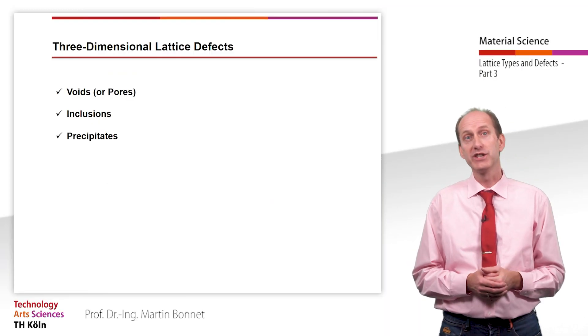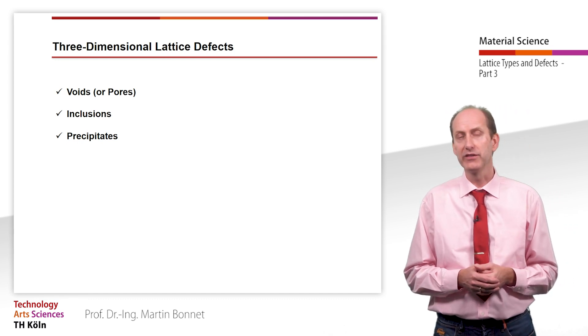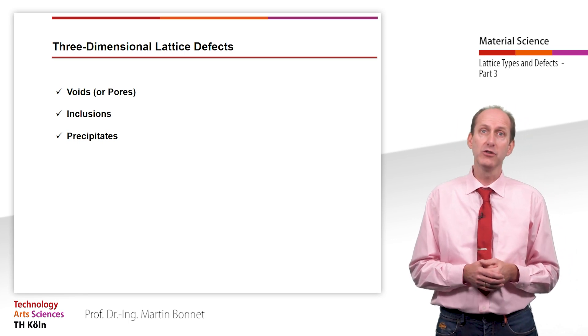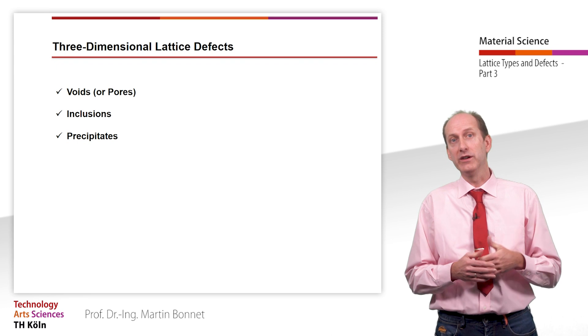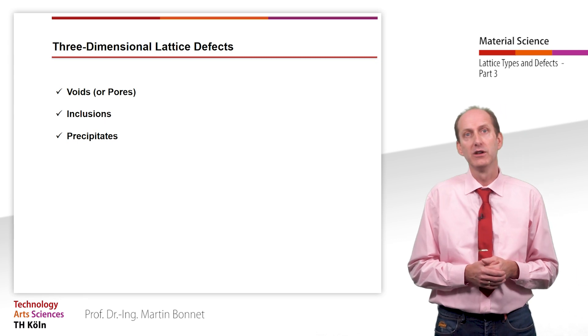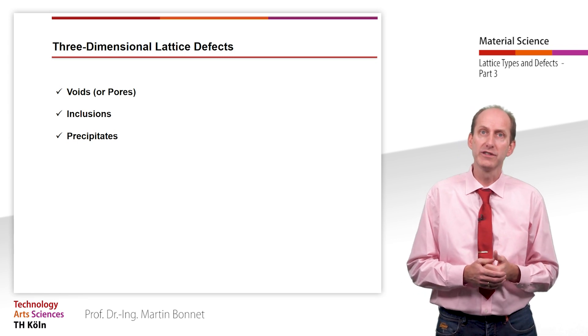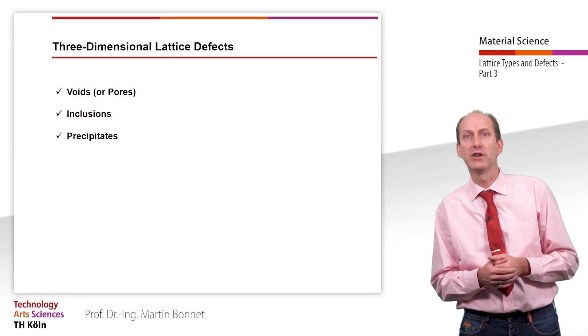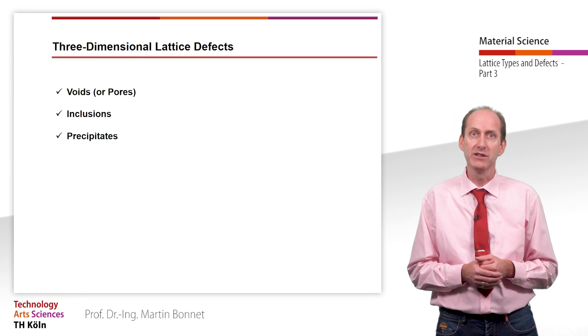Volume defects, which are also called inclusions, are created through gaseous liquid or solid impurity phases and occur within the crystal. We distinguish between voids or pores, inclusions and precipitates. Voids are simply hollow spheres within a crystal which are filled with gas or liquid, whereas solid impurities are referred to as inclusions. Precipitates are special cases of inclusions in which the impurity is created by the crystal itself. We will talk about this further when we have a look at non-ferrous metals in connection with the precipitation and hardening of aluminum.